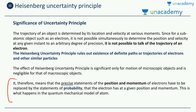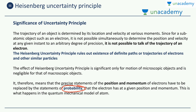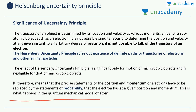It therefore means that the precise statements of position and momentum — we cannot say with 100% certainty what the position and momentum are. Any one of them can be measured with a 100% degree of precision, but not both simultaneously. So this precision has to be replaced by the statements of probability. We can only be up to a certain percent sure — say 80% sure that the electron is lying at this distance, or 70% sure that the momentum of the electron is this much. We now have to write a probability. This 100% certainty has to be replaced with a probability that the electron has a given position and momentum. This is what happens in the quantum mechanical model of an atom.